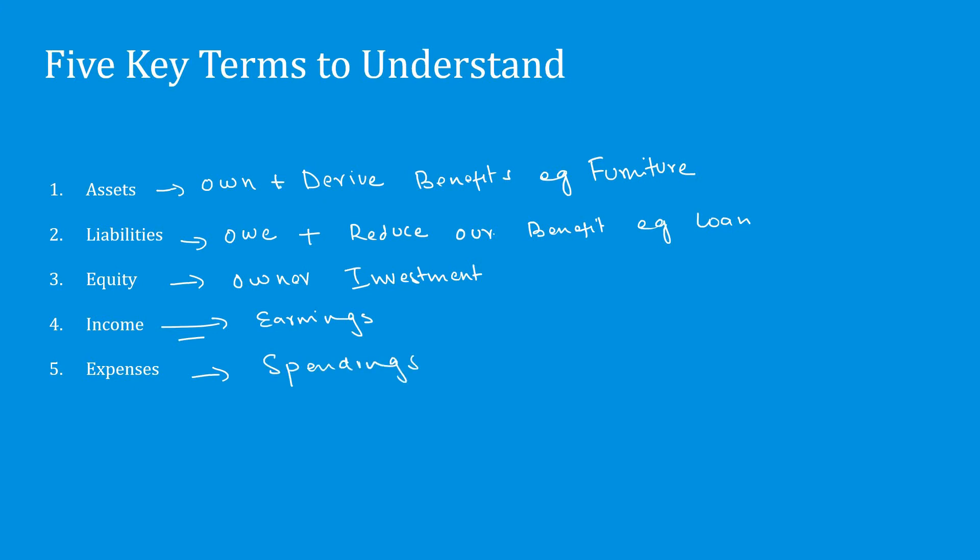So five key concepts. Asset is something that we own and we can drive benefit from. Liability is something that we owe to others and it will reduce our benefits in future. Equity. Owner's investment in business is called equity. Income. The earnings of the business is called income. The spendings of the business is called expenses.